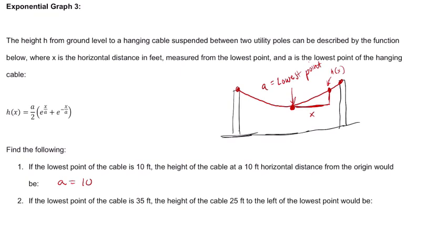And the height of the cable at a 10 foot horizontal distance from the origin. So the lowest point is at the origin. And x is the horizontal distance from that. It's 10 feet. Plug these numbers in. And we can work with it.